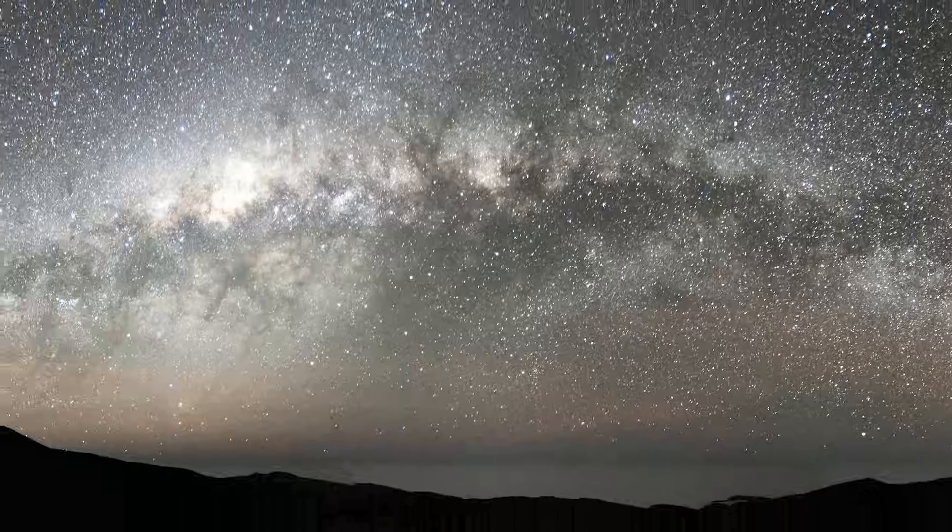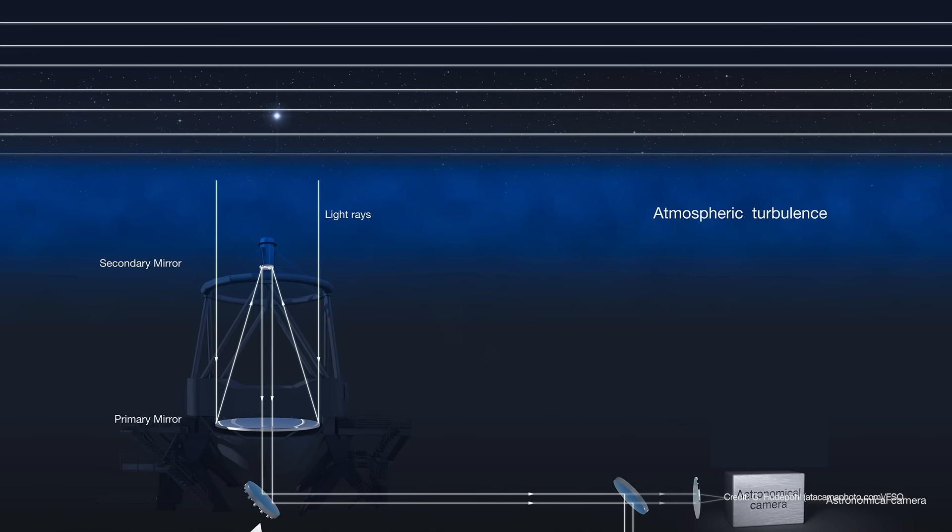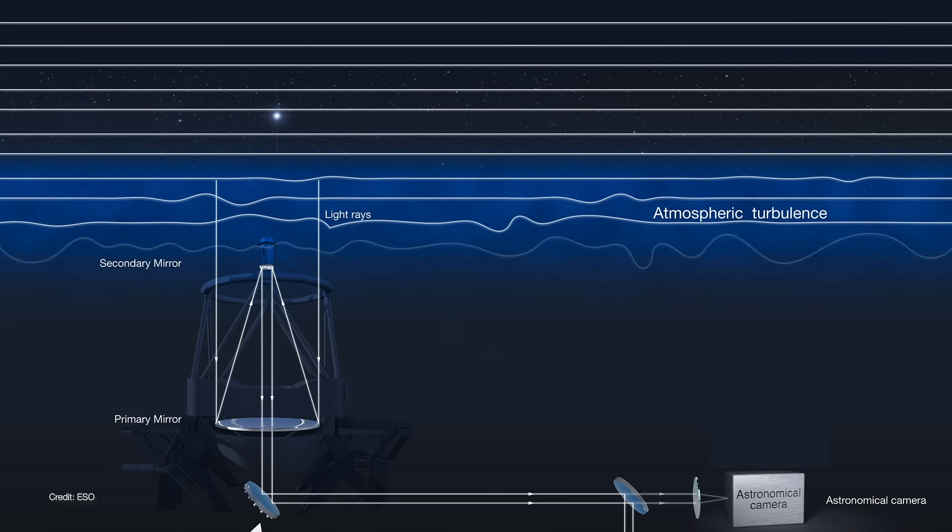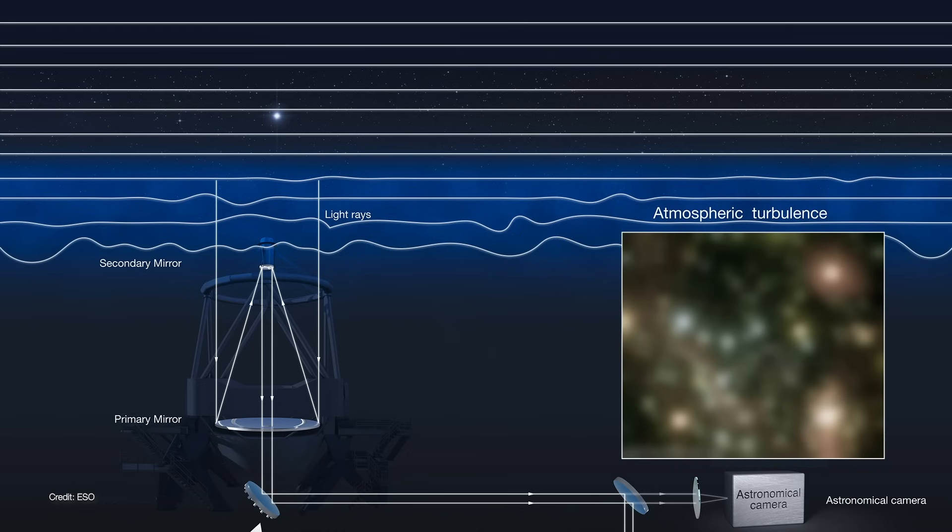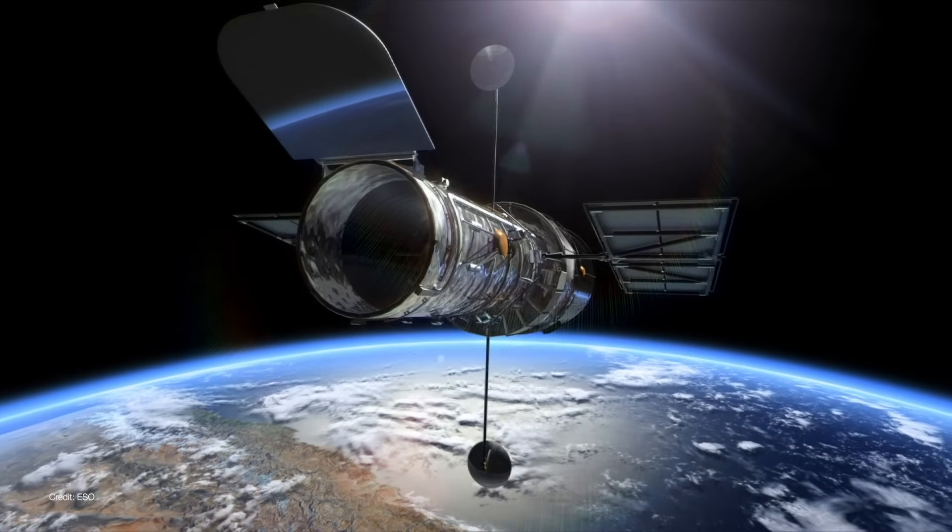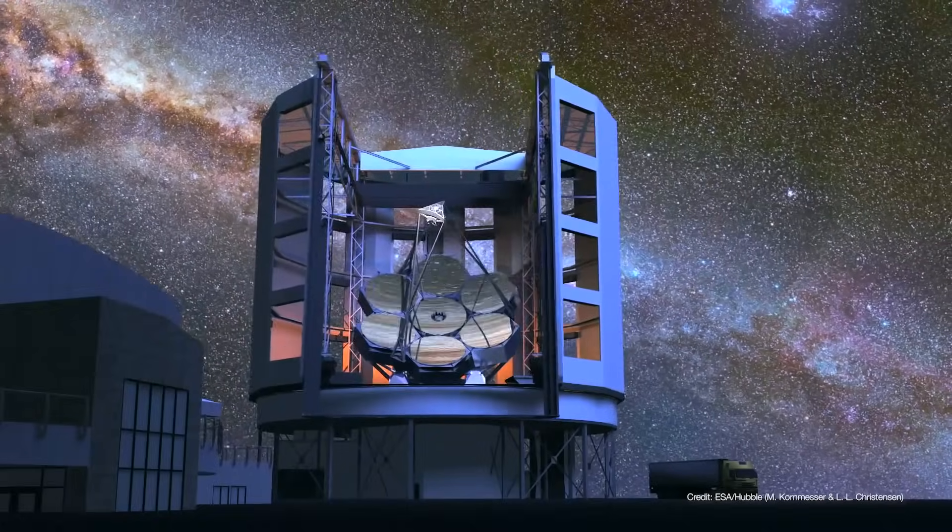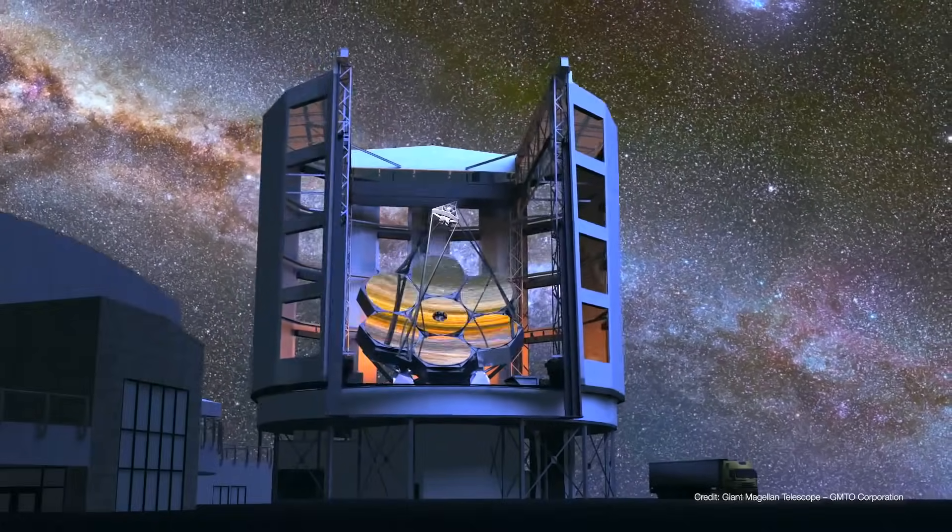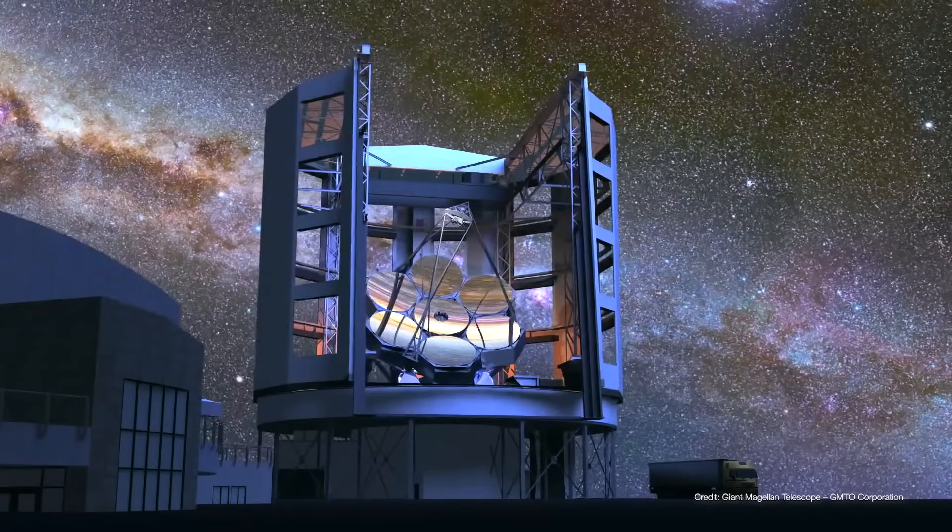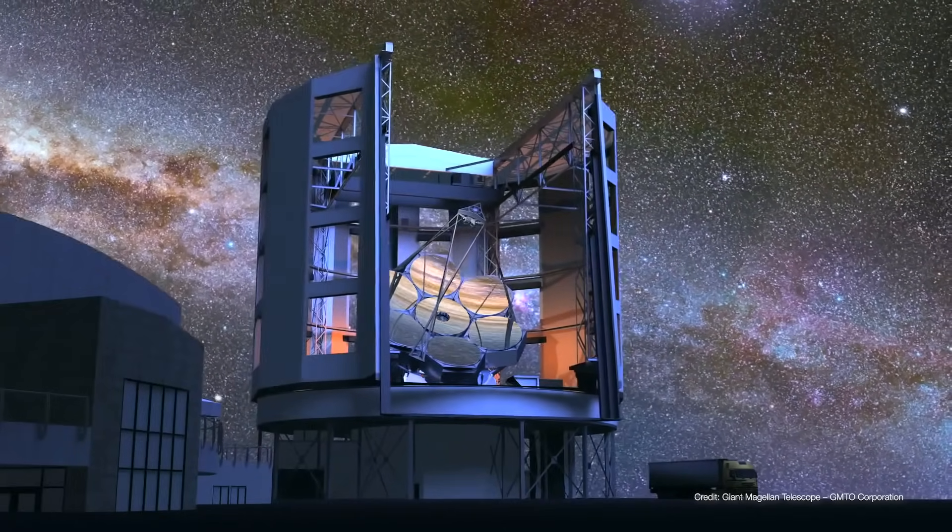But even under the clearest of skies, telescopes have to contend with the distorting effects of the Earth's atmosphere. This is a phenomenon called astronomical seeing, and it's the reason we send telescopes like Hubble into space. But a telescope as large as GMT isn't going to find its way into space anytime soon. But it does have a really cool trick up its sleeve.